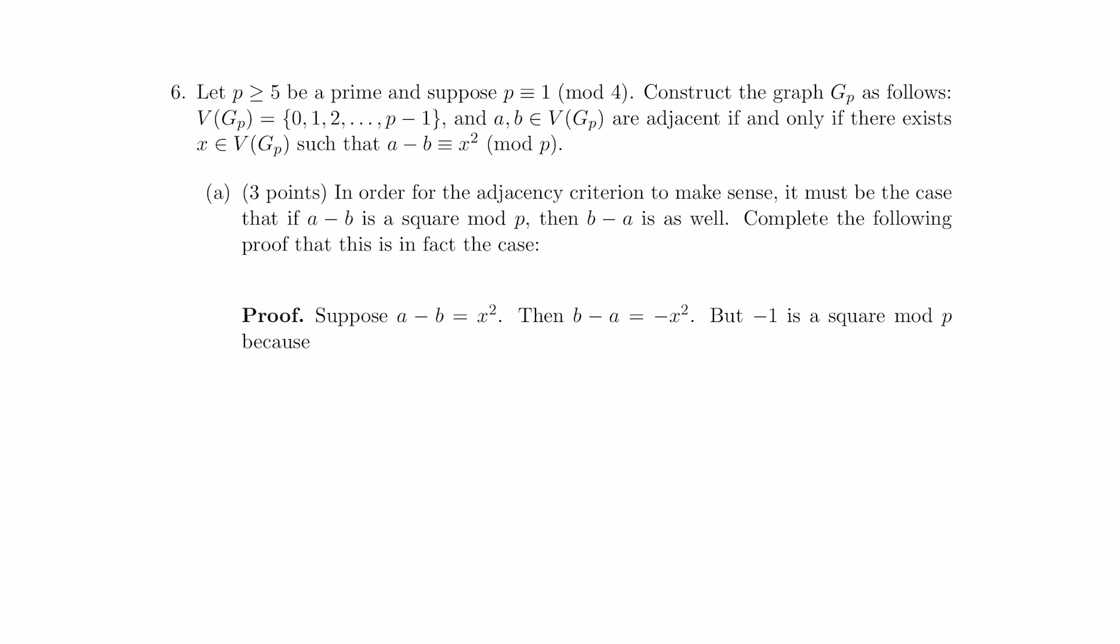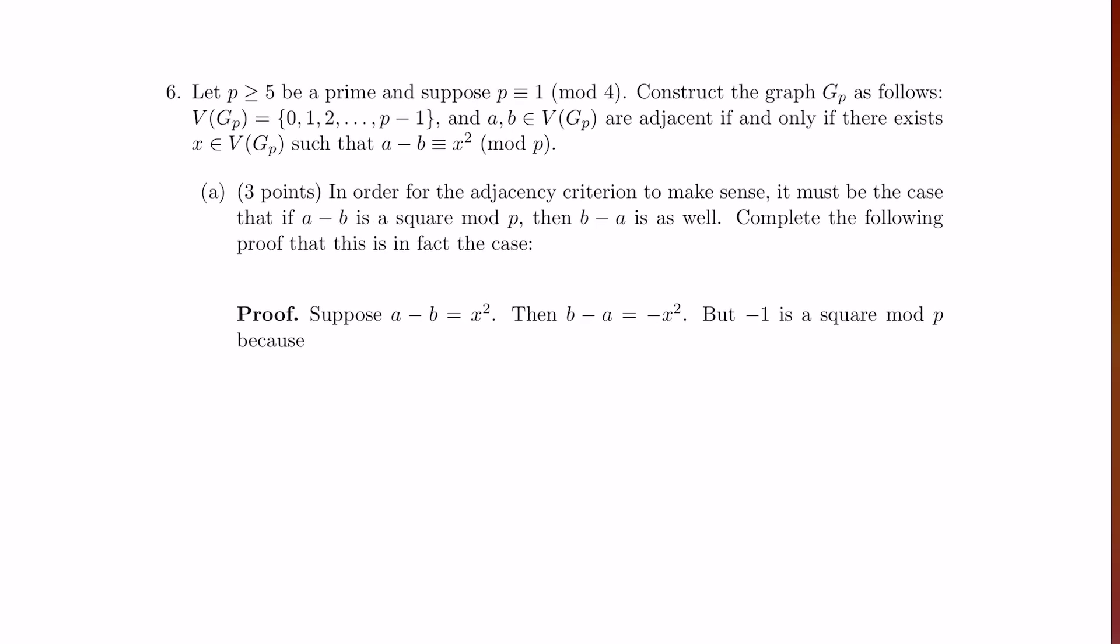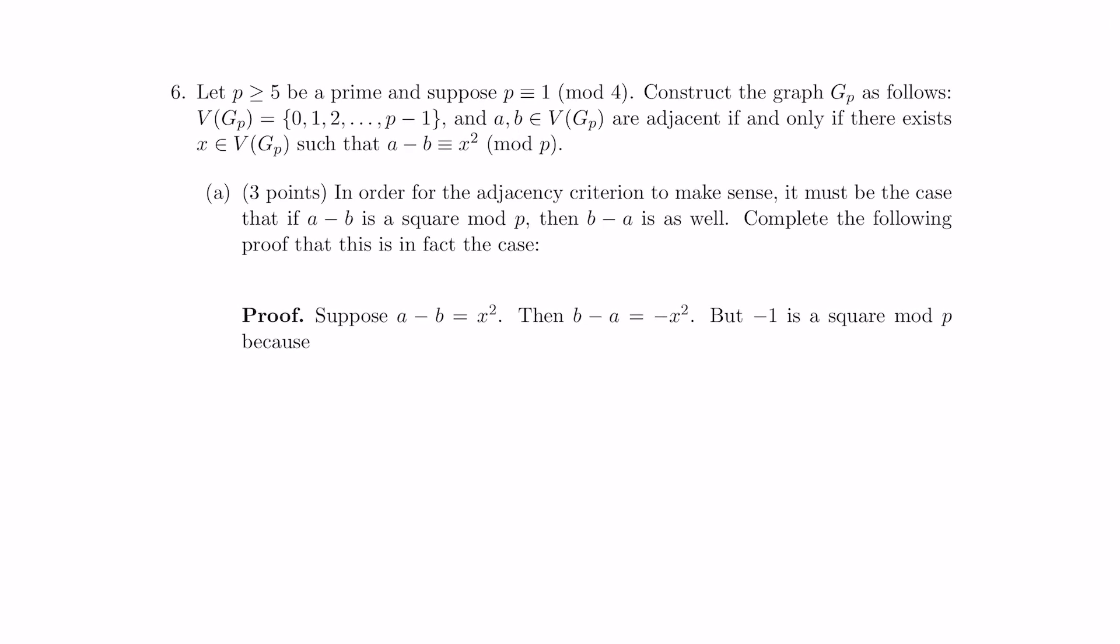So here what we're doing is, and even if you don't understand graph theory again, the whole point here is to get a sense of what's actually going on. So what you do is you take the numbers mod p, and here we've chosen p so that it is one more than a multiple of four. Okay, so you construct vertices 0, 1, 2, up to p minus 1. Okay, and you construct a graph where two elements, A and B, are adjacent, if and only if their difference is the square of a number, mod p.